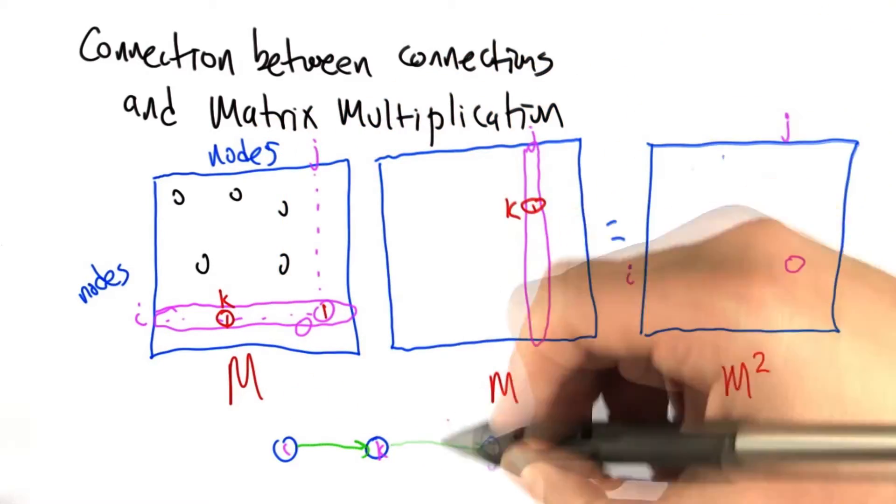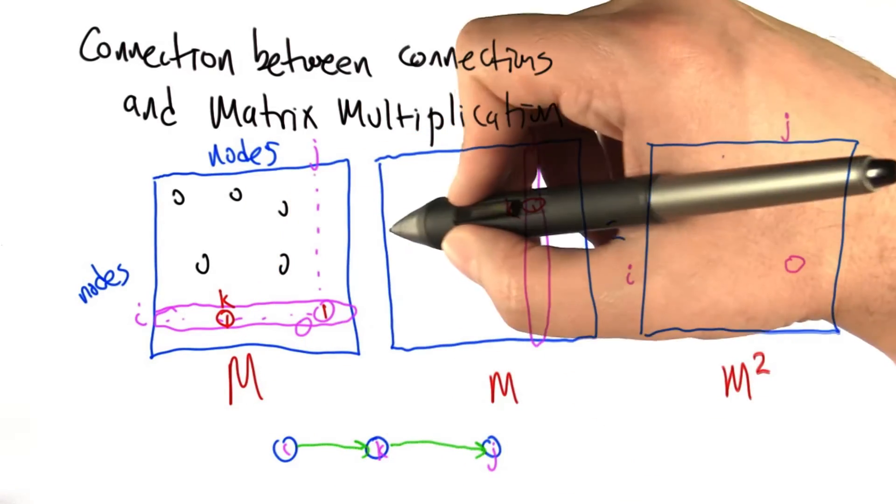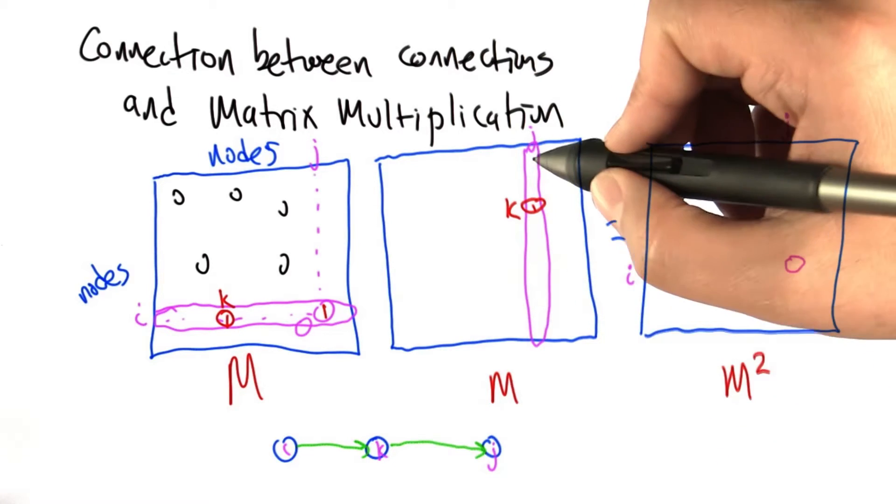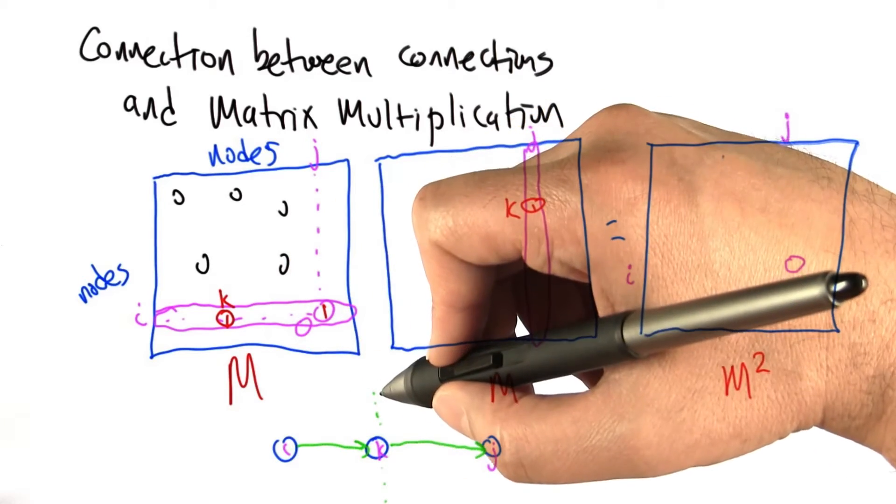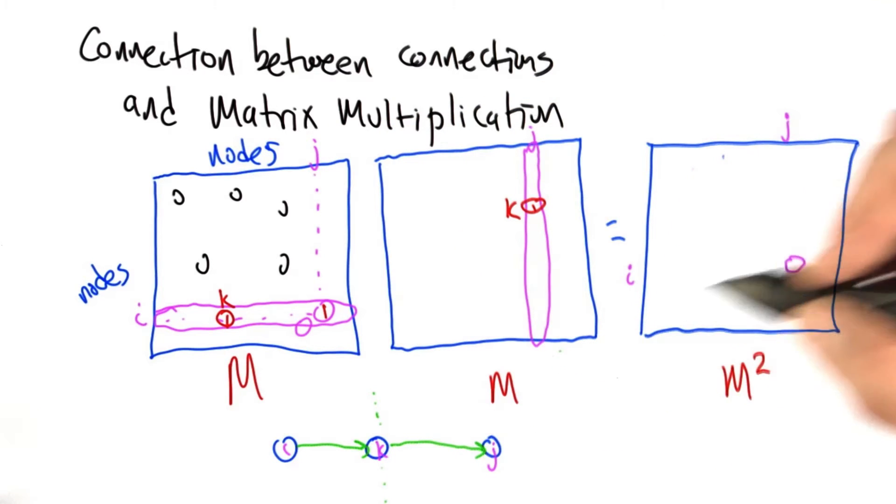Similarly, if there's a 1 in this position, it means that the same graph that we're talking about, this graph that M is representing, also has a link from k to j. And what we're doing is counting up all the k's that have the property that you can get from i to one of those, and then to j from one of those. So it's going to add all those up. That's exactly what matrix multiplication does.